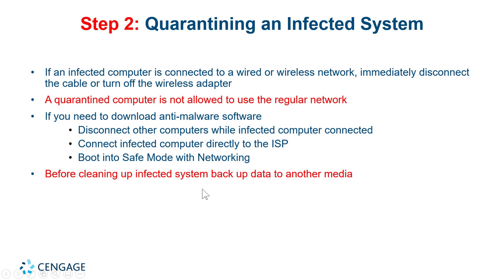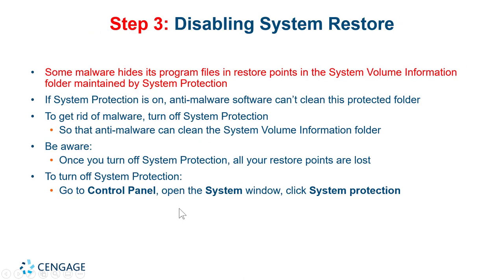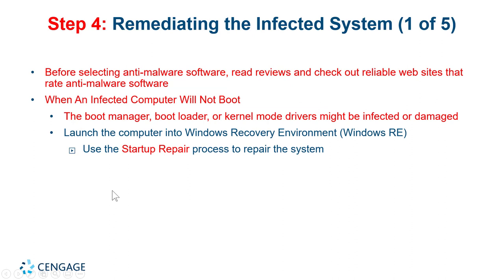Back up the user data to another media just to be safe, but be aware you may have malware on that media. Step three: disable System Restore, because the malware may have embedded itself in drivers or settings, and rolling back to an earlier restore point could re-enable the malware. Anti-malware software can't clean the protected folders of System Protection, so turn off System Protection, clean the system, and then once everything is clean you can turn System Protection back on via Control Panel > System > System Protection.